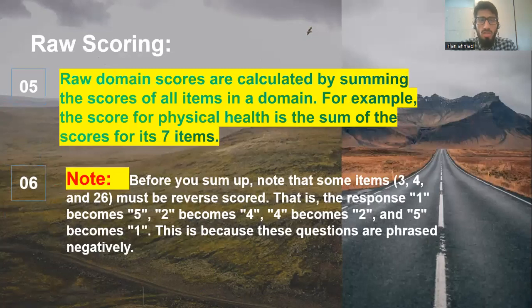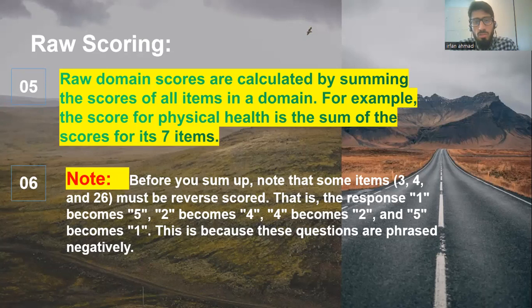Now, what is the raw scores? The raw score is actually the scores that you obtain directly from questionnaire, from each item, are calculated by summing the score of all items in the domain. For example, the score for physical health is the sum of the score for its all seven items. Now here also a small note for you guys, when you score the raw scores, you have to keep in mind that question number three, question number four, and question number 26, they must be scored reverse. For example, if the patient's response is one, so it will become five. If their response to the question is two, you score them as four. If you write four, so it will become two, or five will become one. It is completely reverse, only for these three questions, because these questions are phrased negatively.